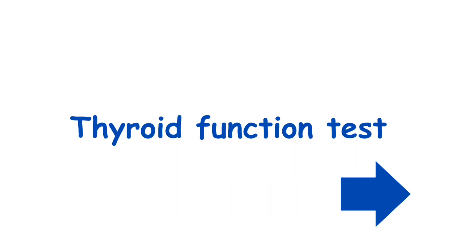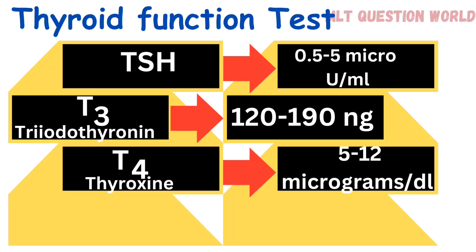Next is thyroid function test, which includes T3, T4, and TSH. TSH is 0.5 to 5 micro units per ml. T3 (triiodothyronine) is 120 to 190 nanograms per deciliter. T4 (thyroxine) is 5 to 12 micrograms per deciliter.